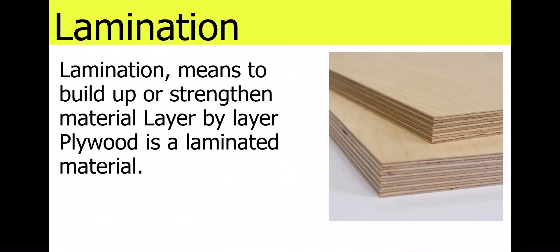Lamination. Lamination means to build up or strengthen material layer by layer. Plywood is a laminated material made from different layers of wood, and you can see the layers there in the picture — plywood and lamination.